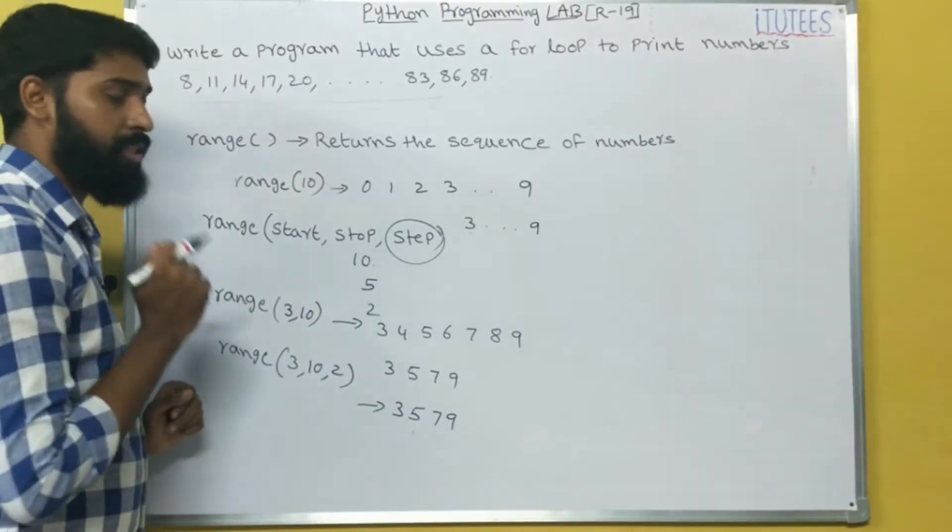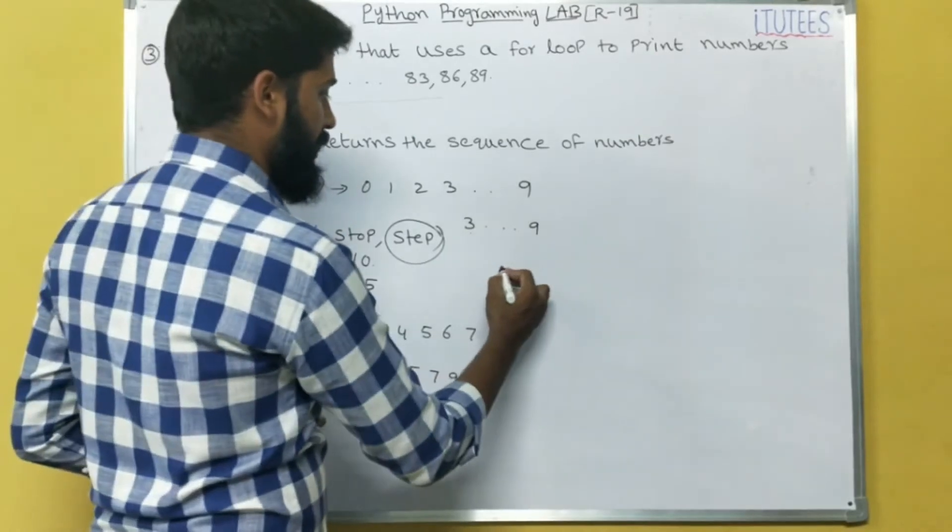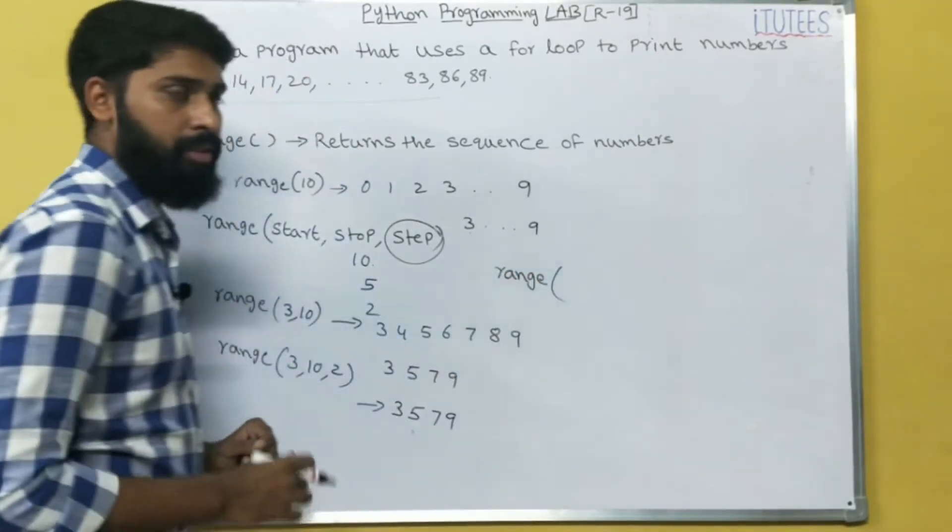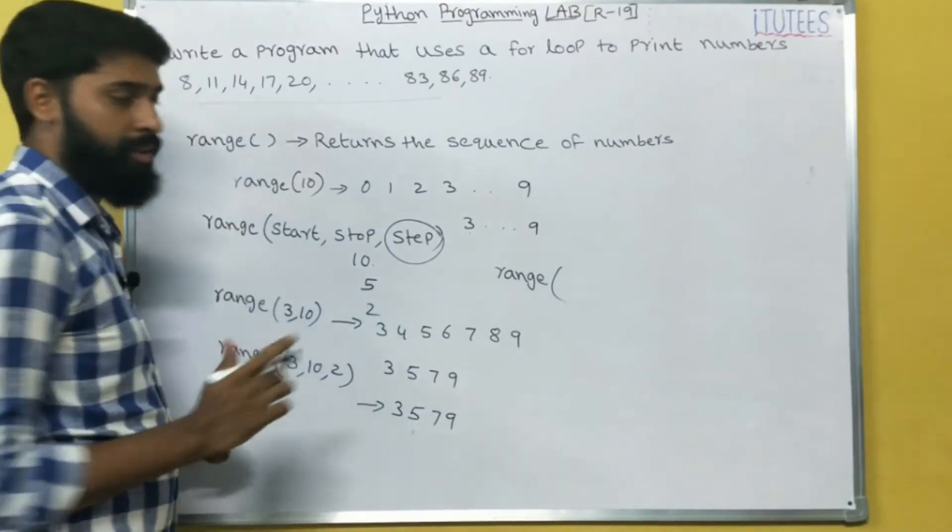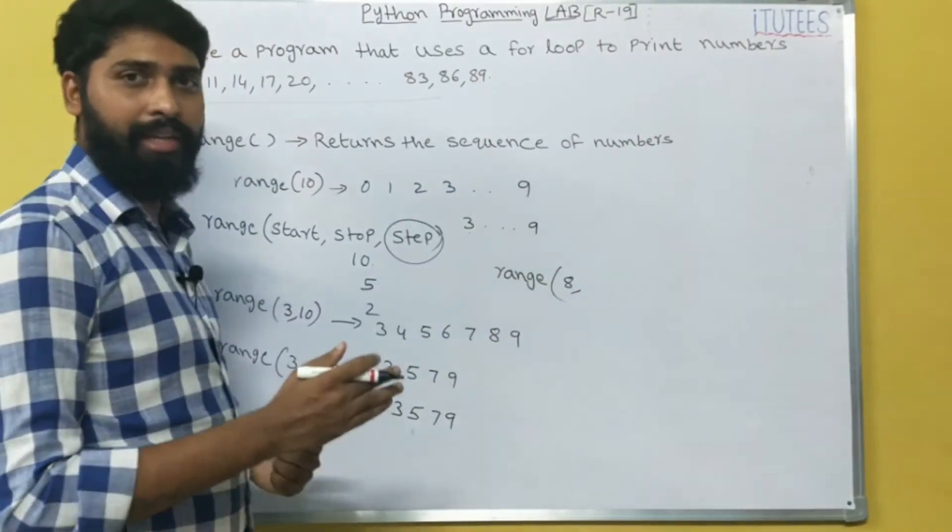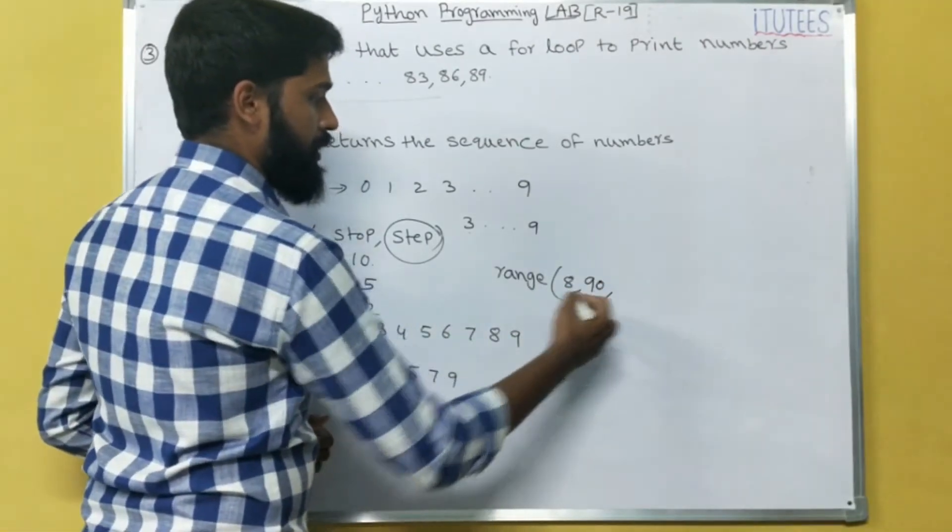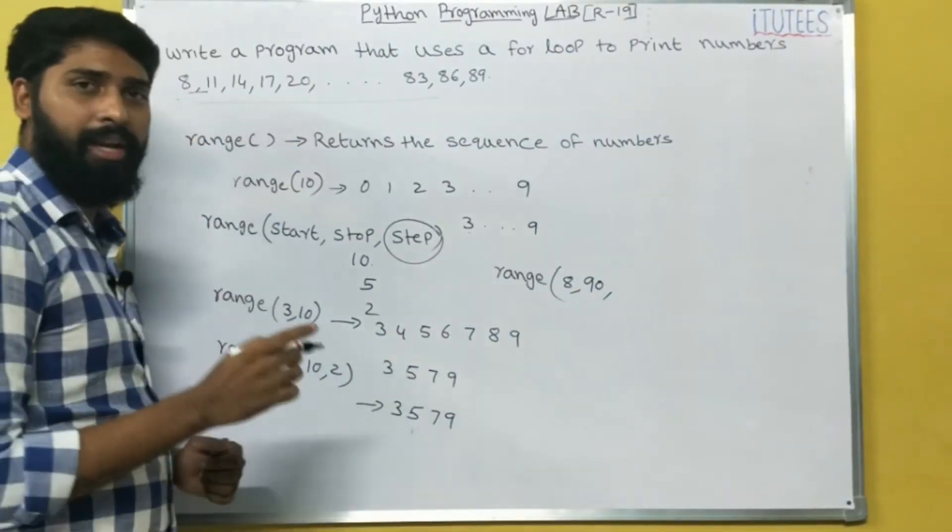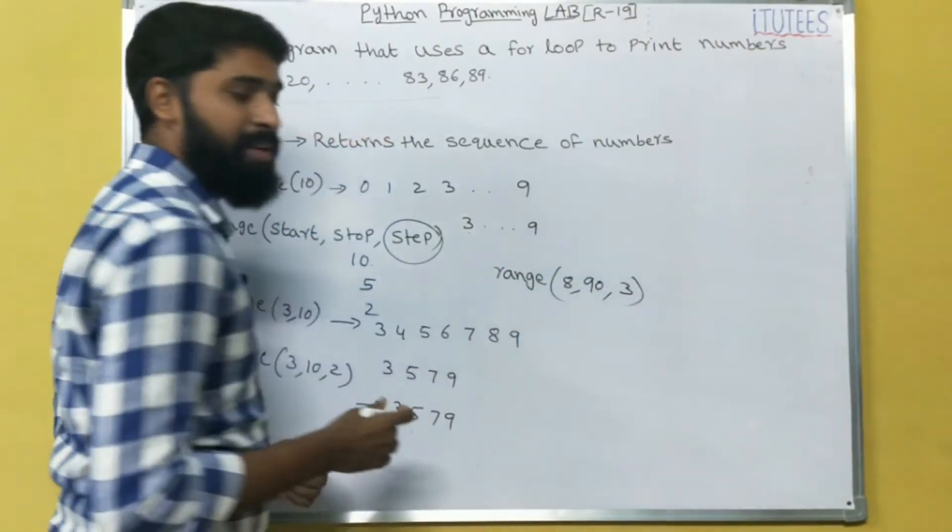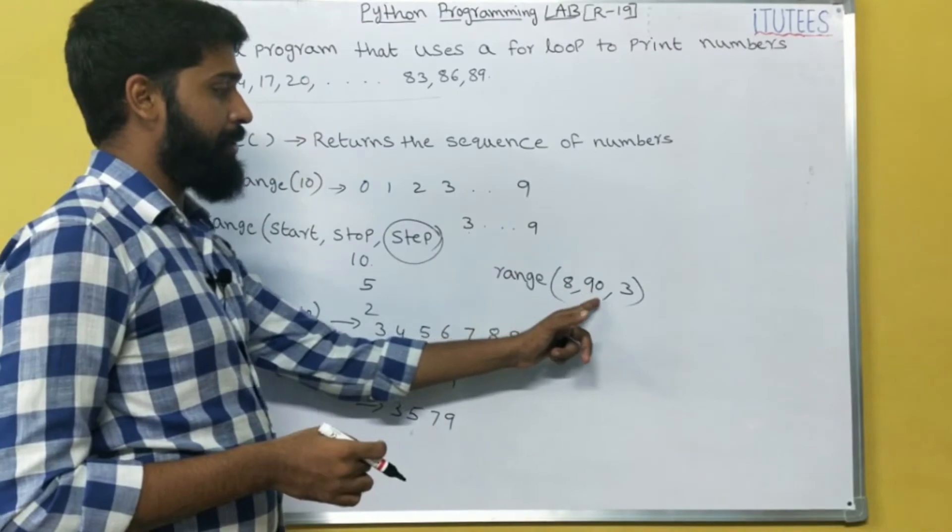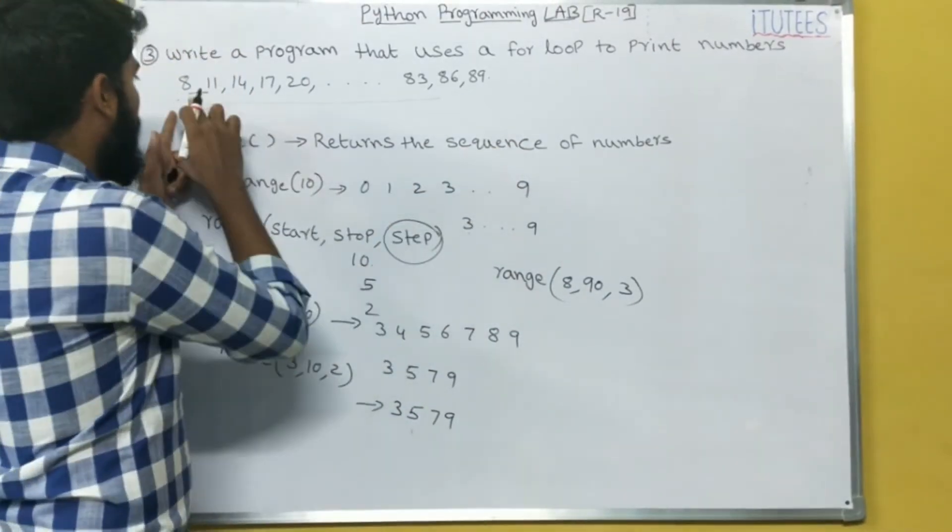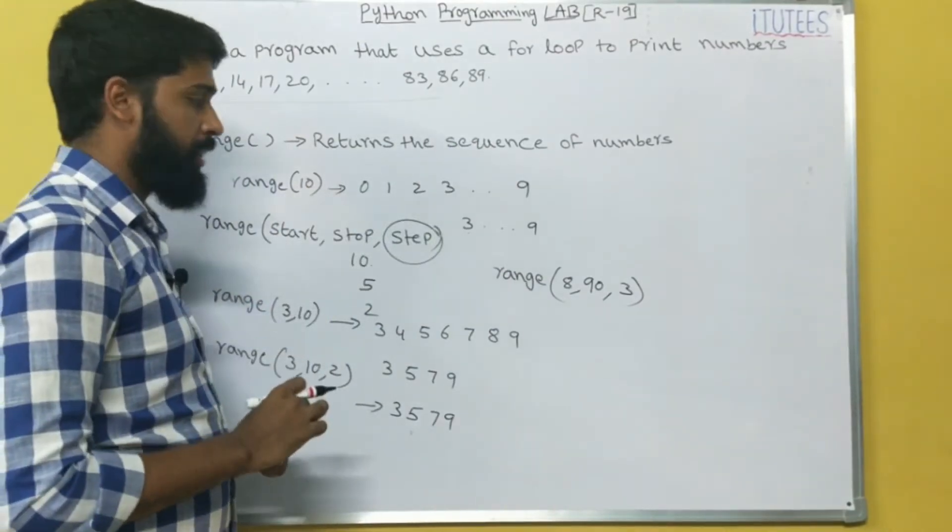Now you can write this program. For the sequence of numbers, I can write range of, what is the starting value? 8. What is the ending value? 89 plus 1, that means 90. What is the step here? 9, 10, 11, that means 3. That means range of 8, 90, 3 returns the sequence of numbers from 8 to 89. Okay.